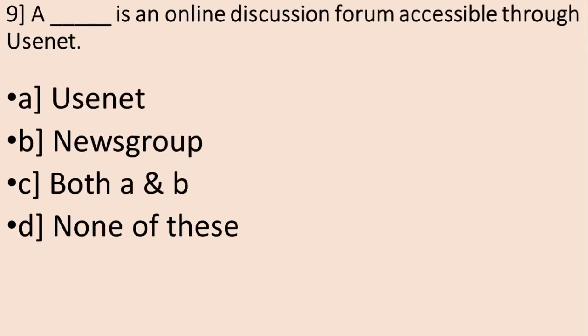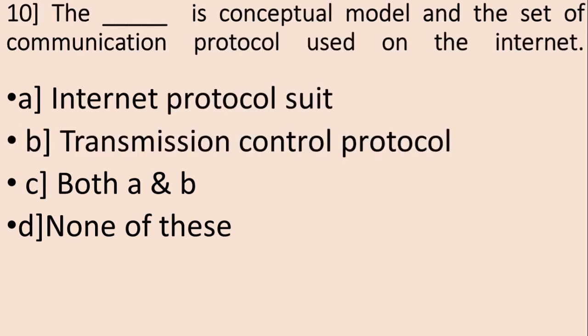Move on to next question. A blank is an online discussion forum accessible through Usenet. The options are A, Usenet, B, Newsgroup, C, both A and B, and D, none of these. So the correct answer is B, Newsgroup. Next question: The blank is an internet protocol used on the internet. The options are A, Internet protocol suite, B, Transmission control protocol, C, Both A and B, and D is none of these. So the correct answer is A, Internet protocol suite.